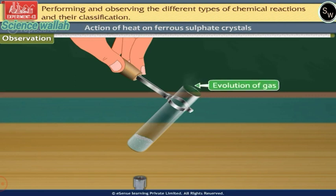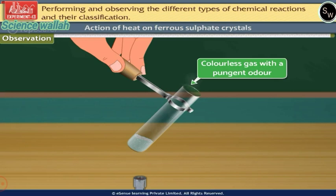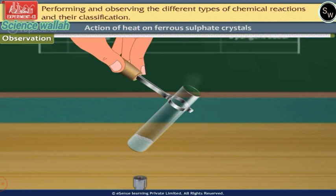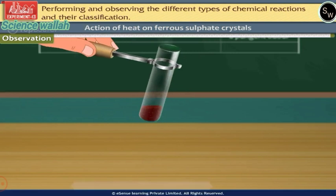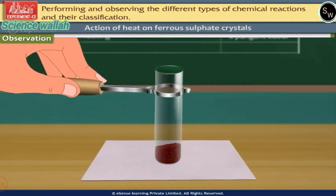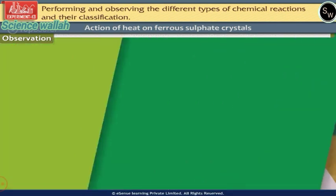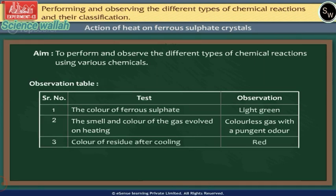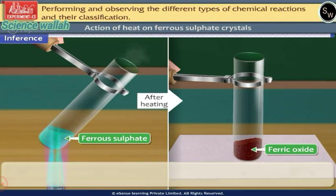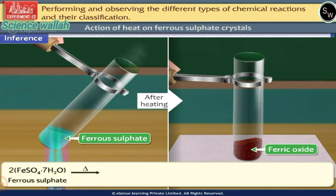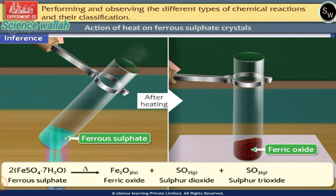There is evolution of a gas — note its smell and colour. The evolved gas is colourless with a pungent odour. Continue heating until the colour of the residue changes. The light green coloured crystals of ferrous sulphate on heating have changed to a red coloured residue. Inference: ferrous sulphate strongly decomposes to give red coloured iron(III) oxide (ferric oxide) and a mixture of sulphur dioxide and sulphur trioxide gases with pungent smell. This is an example of a decomposition reaction.